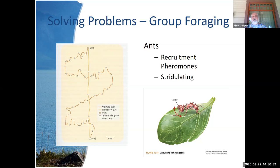Eventually they'll fix it — they'll figure out where the trail is and keep going. There are lots of outward paths, but the homeward path is very quick. That yellowish line on the left in the image gets stronger and stronger and directs the ants to food. It's amazing how quickly they can find stuff. There are also certain ants that do stridulation, which is a signal where they make a noise moving their abdomens back and forth to also communicate.